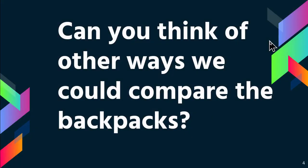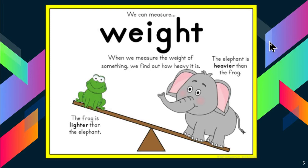Can you think of other ways we could compare the backpacks? We can measure their weight. When we measure the weight of something, we find out how heavy it is. So if I look at this picture, I would say the elephant is heavier than the frog. The frog is lighter than the elephant.